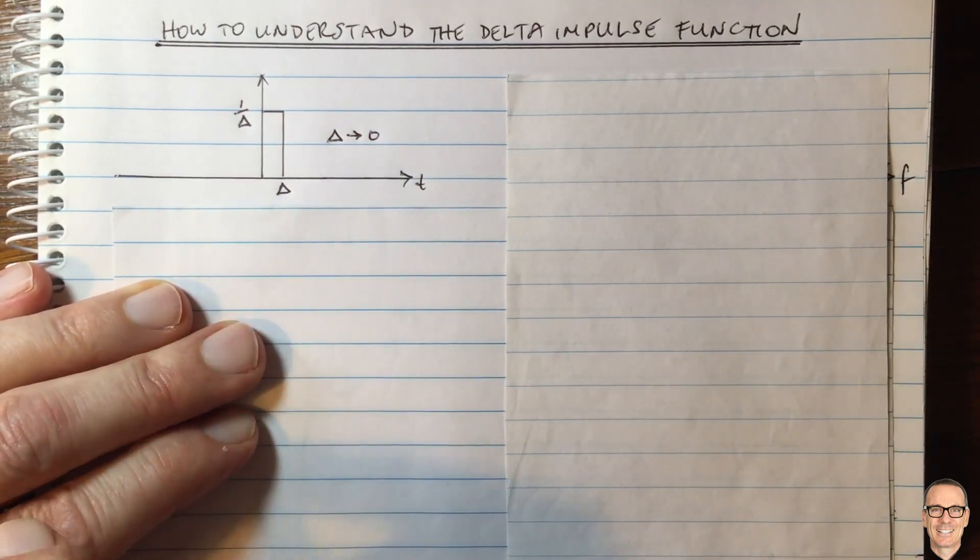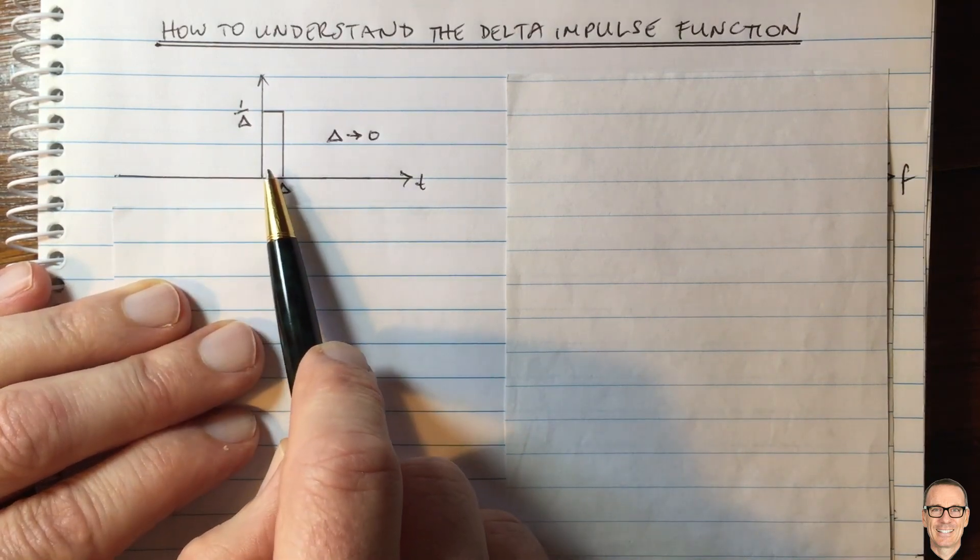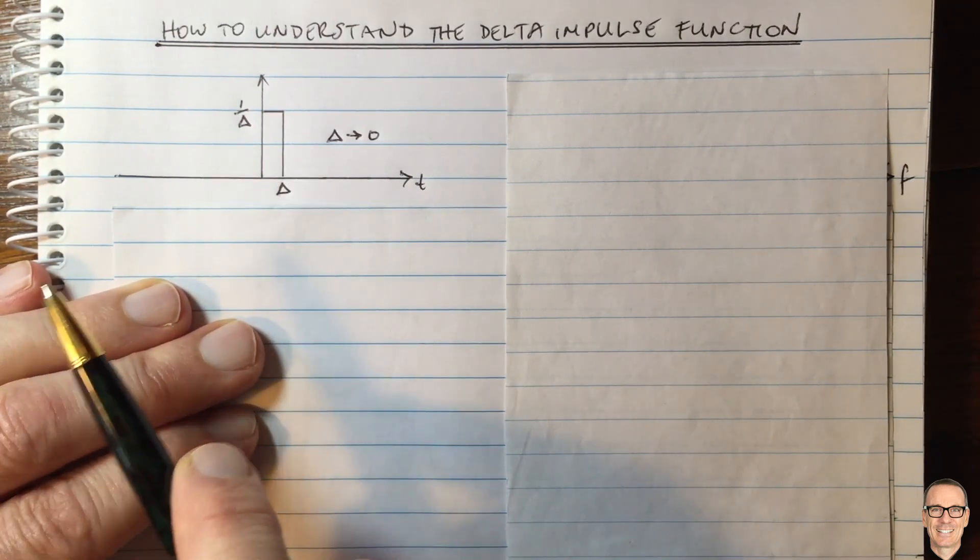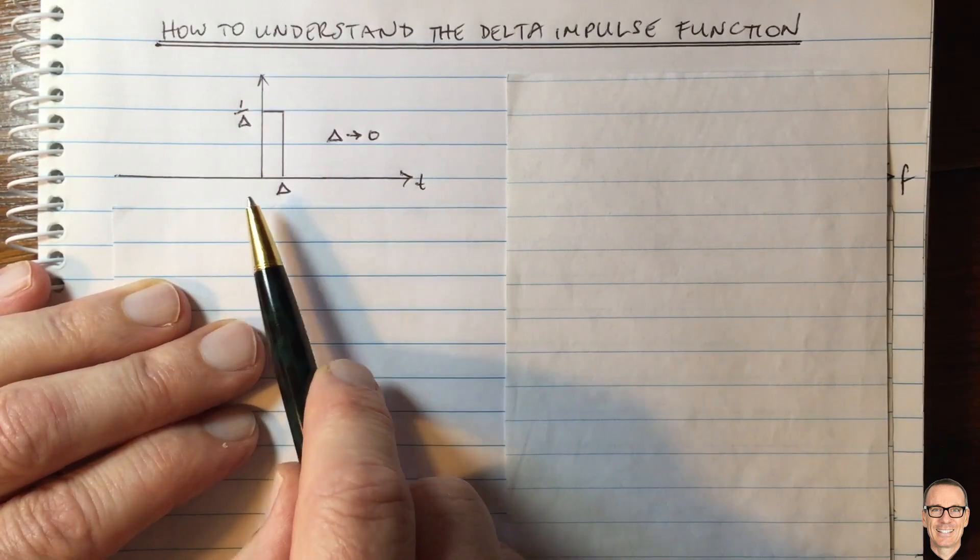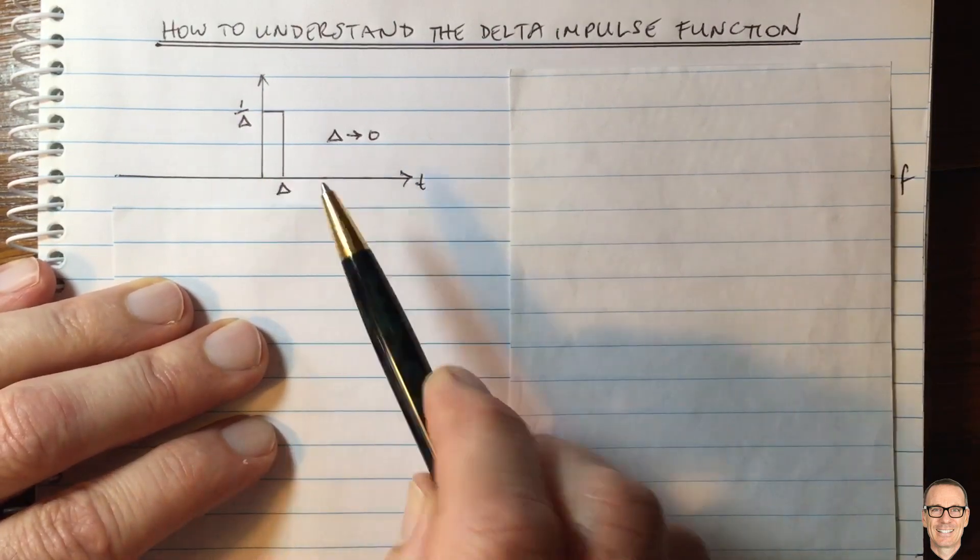So let's think about why that's a good way, and what does it mean when we write a number next to a delta function, especially when we're doing sampling. Well, let's look in the frequency domain.